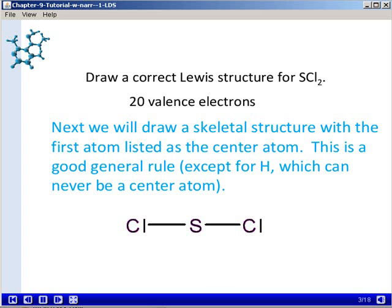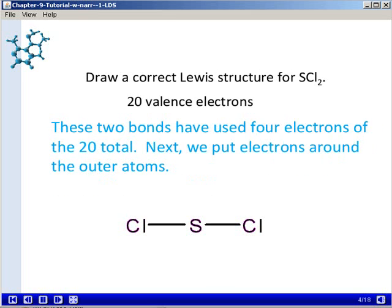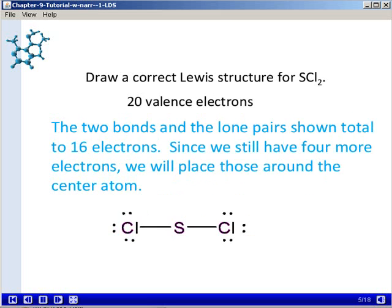A dash line represents a single pair of electrons shared between the atoms. Those two bonds have used up 4 of our total of 20 electrons. So the next thing we'll do is put electrons around the outer atoms, the chlorine atoms, in order to satisfy the octet rule.